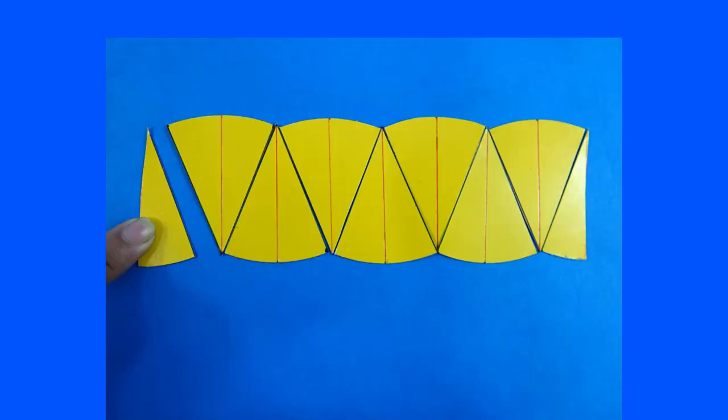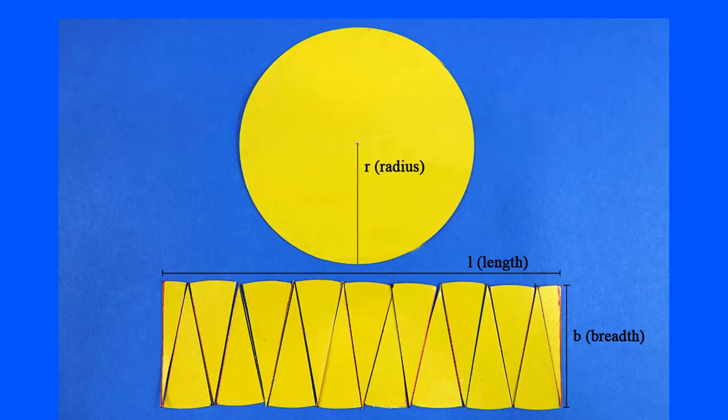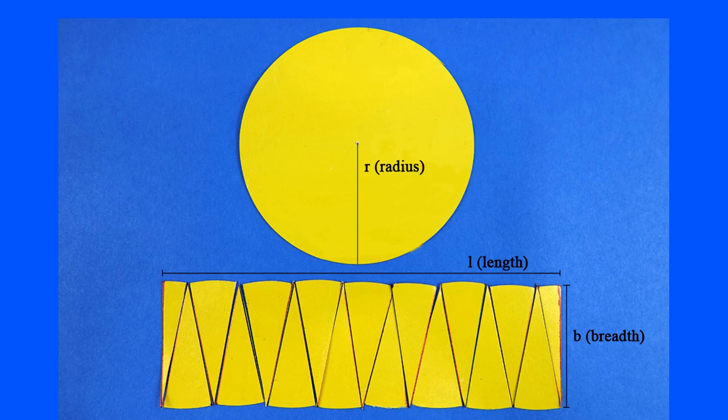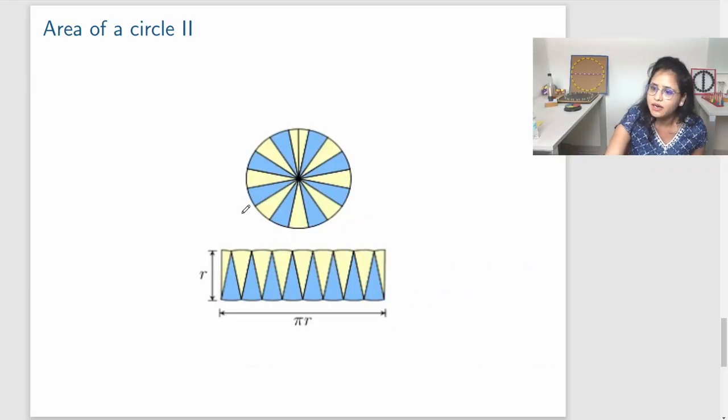I can't say it is exactly rectangle because the top of it is still a little bit curvy. The rectangle should be straight. This height we know is R because it's the radius. This thing because it's half of the perimeter, it is pi R and the area of a rectangle is base times height, that is pi R times R and it is pi R square. We see that if we increase the number of these little triangles, we will get very close to pi R square, the exact result.